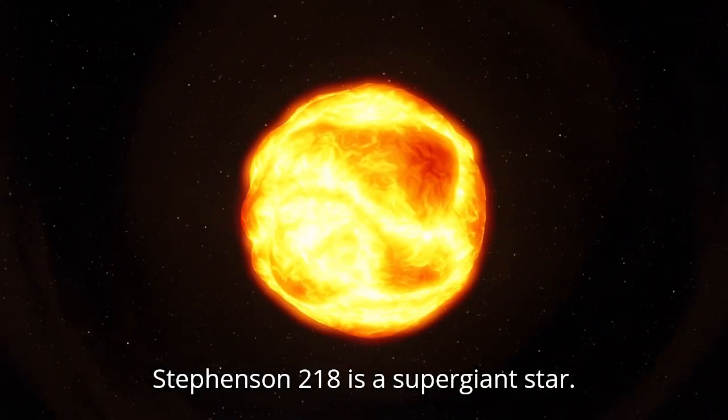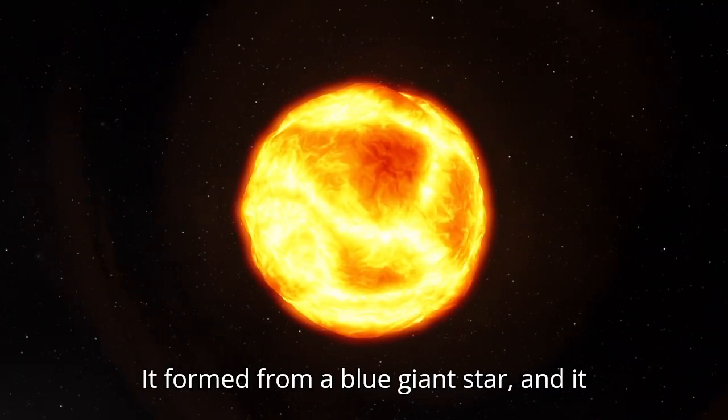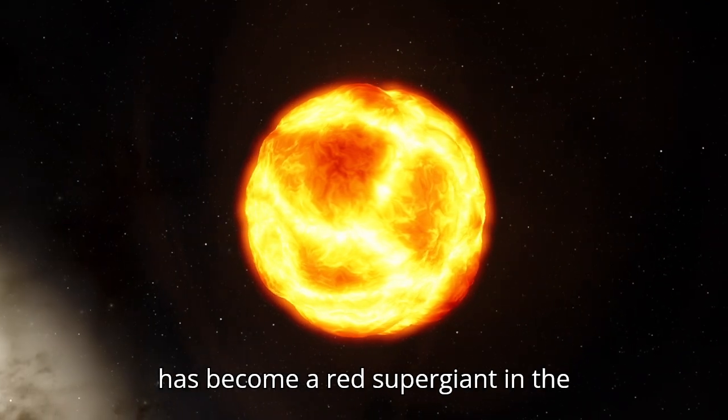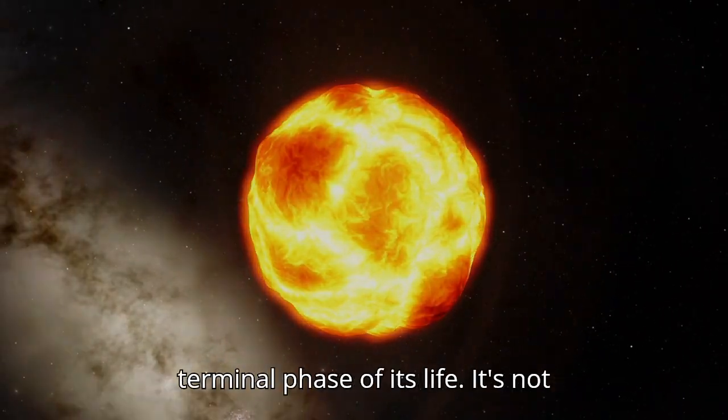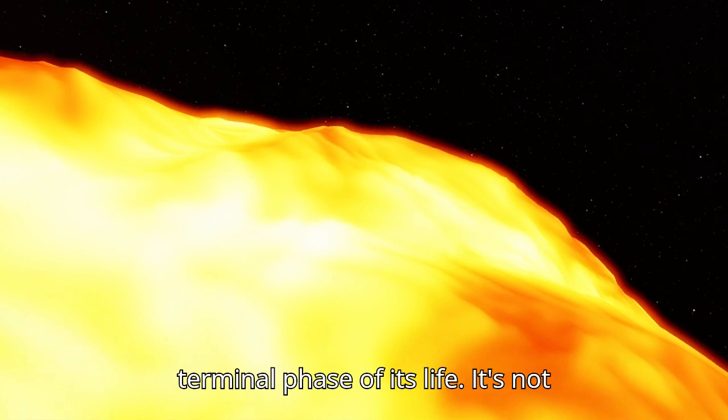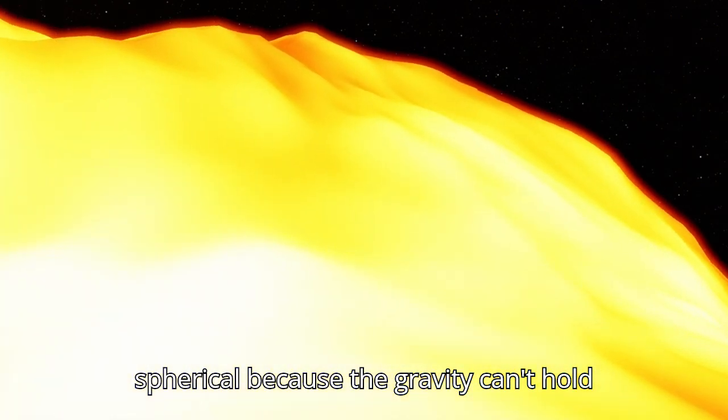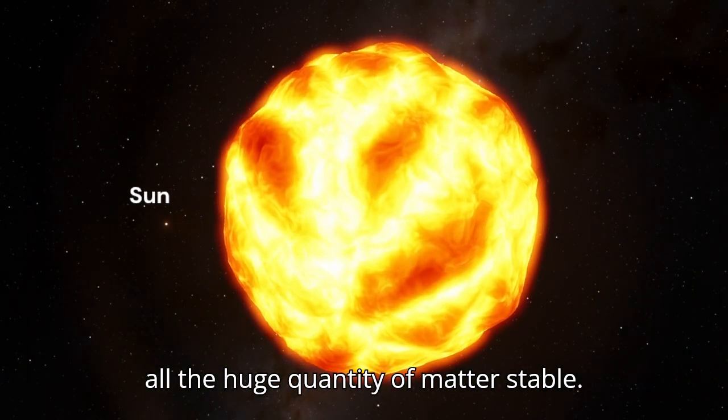Stevenson 218 is a supergiant star. It formed from a blue giant star and has become a red supergiant in the terminal phase of its life. It's not spherical because the gravity can't hold all the huge quantity of matter stable.